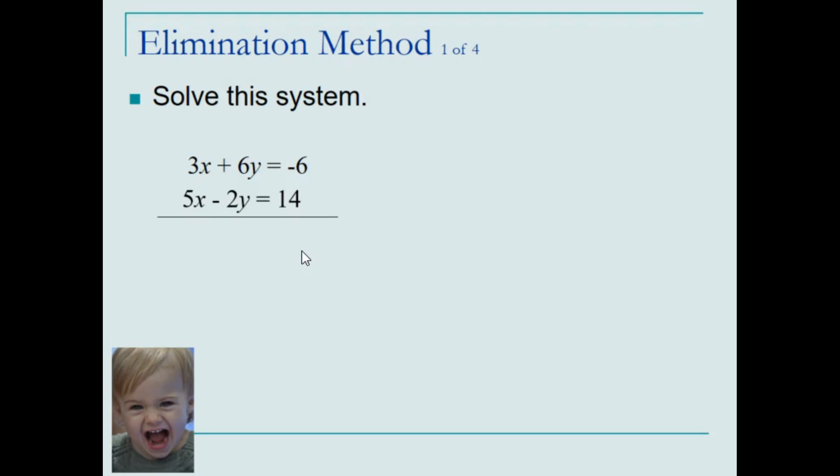It doesn't matter if it's x or y, but looking at the y's in this particular system, we see that right now they're opposite in terms of one being positive, one being negative. We can manipulate the 2 to make it equivalent to a 6 by multiplying it by 3. If we multiply the second equation, each and every term by 3, we will have a negative 6y so that when the two equations are added together, the y term will cancel out.